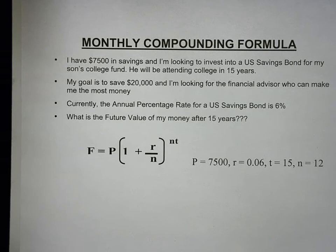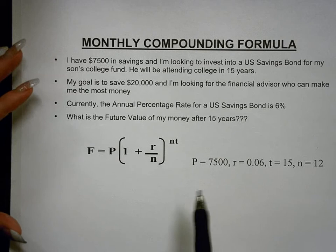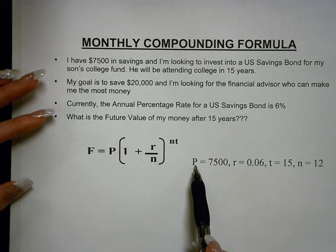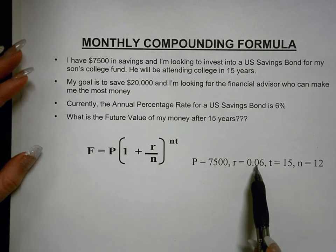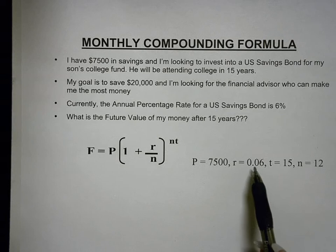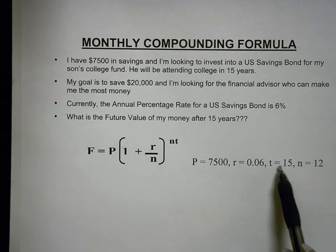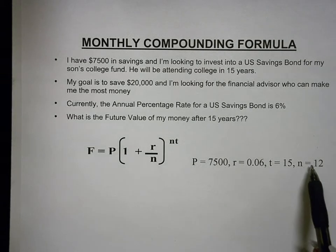Since this is monthly, the interest is being compounded multiple times in a year, so we're going to use the general compounding formula. We need to define the terms: the principal or present value is $7,500. The rate, the APR lowercase r, is in the form of a decimal, which is 0.06. T is 15 years. And since it's monthly compounding, N equals 12, because there are 12 months in a year.